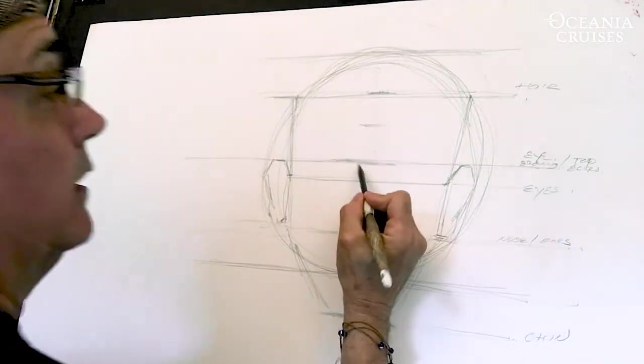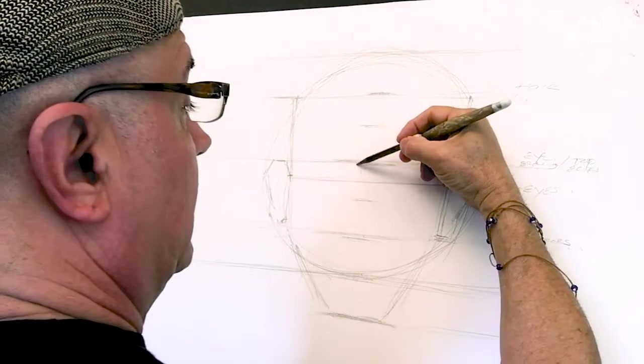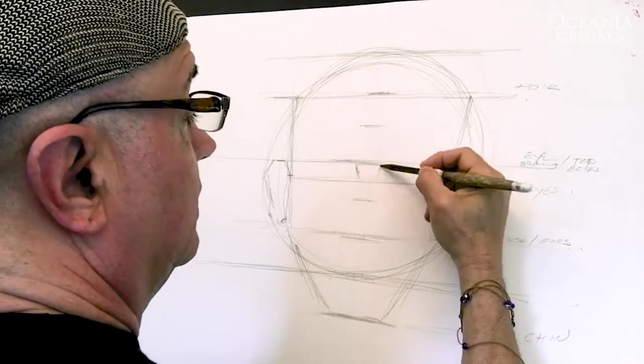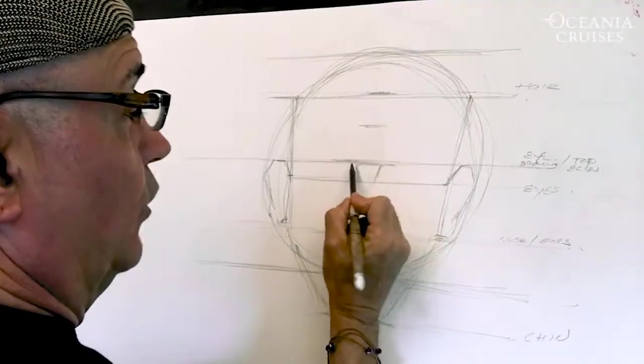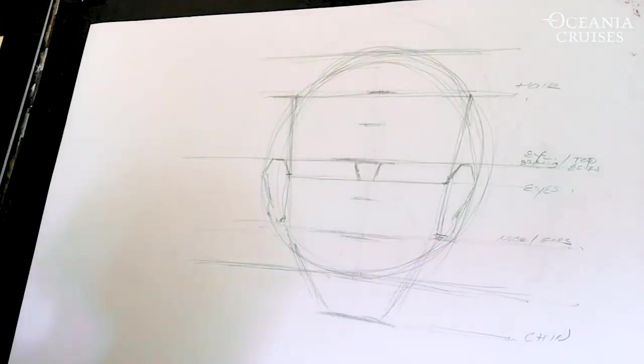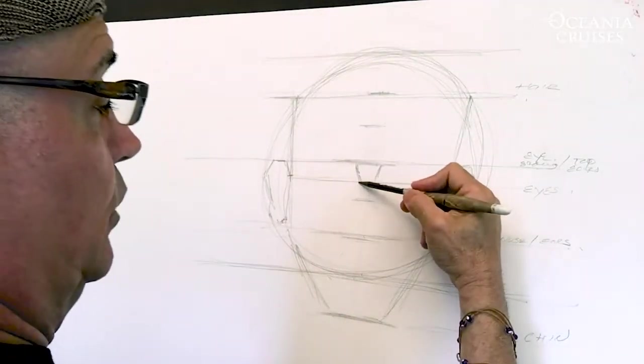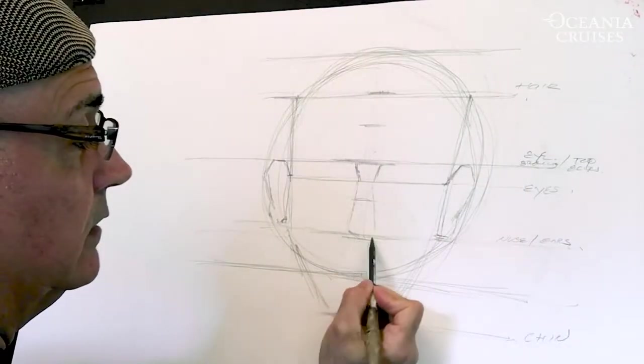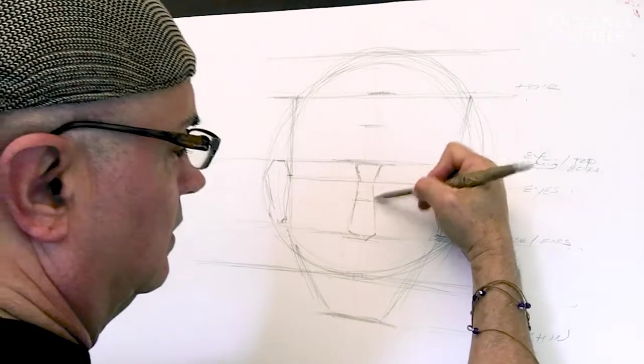So now, from here, we're just going to do a little sort of open triangle, a triangle that doesn't close. It's open on the top, and it's open on the bottom. And then, from there, we're going to come down to here, and, voila, we have a nose.